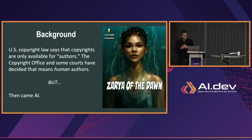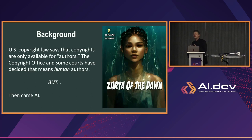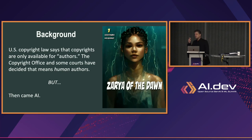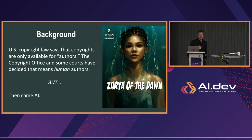US Copyright Law comes from a section in the Constitution that says it is designed to secure for authors and inventors the rights to their writings and discoveries. This idea that it is supposed to be for authors has been interpreted various times to mean human authors.